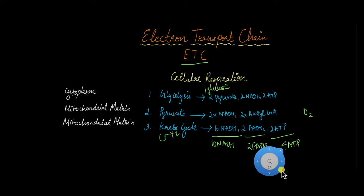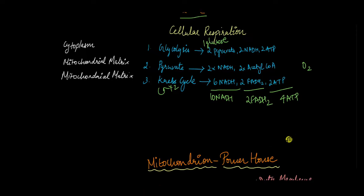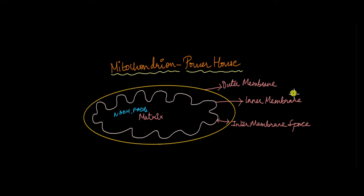To understand that, let's take a look at the mitochondria, because now we've moved on from the cytoplasm to the mitochondria — as glycolysis ended and pyruvate oxidation and Krebs cycle began, we moved from the cytoplasm to the mitochondria. The mitochondrion, rightly termed the powerhouse of the cell, has two membranes: the outer membrane and the inner membrane. The inner membrane has infoldings, and within the inner membrane is a space known as the mitochondrial matrix, where Krebs cycle and pyruvate oxidation took place. The space between the outer and inner membrane is termed the intermembrane space.